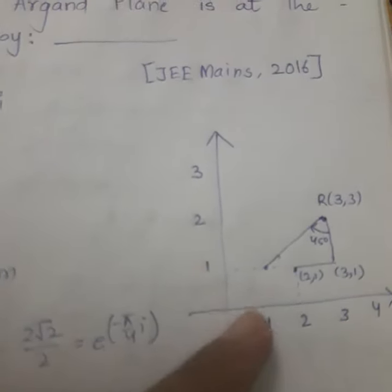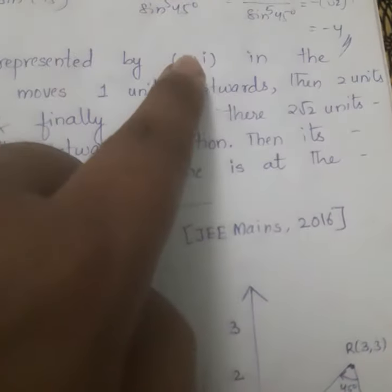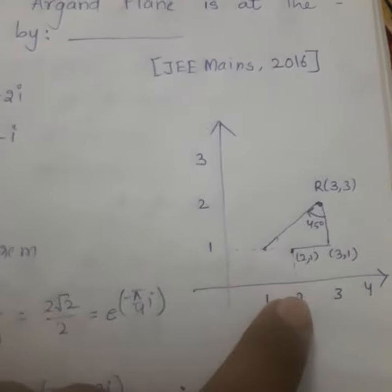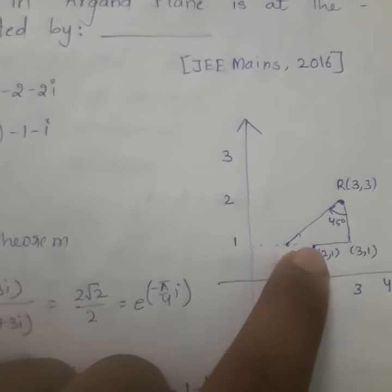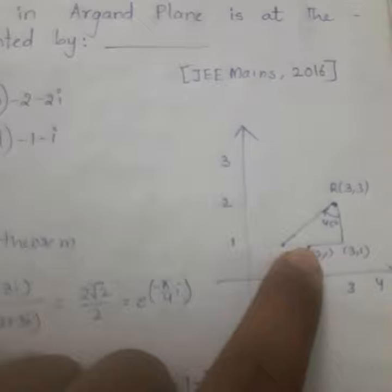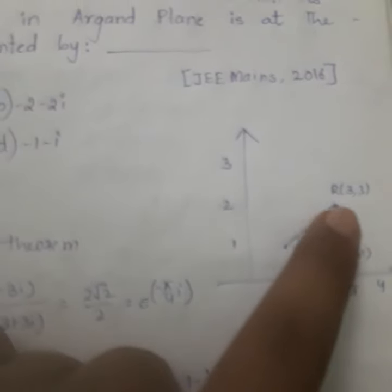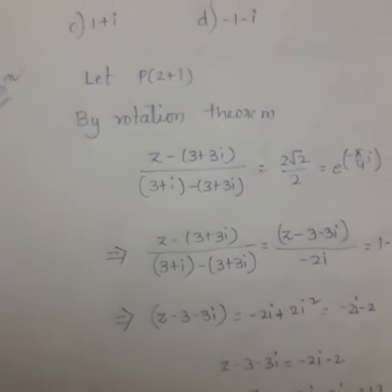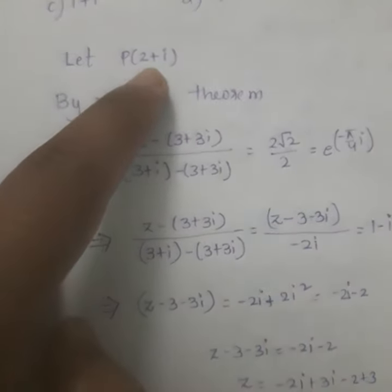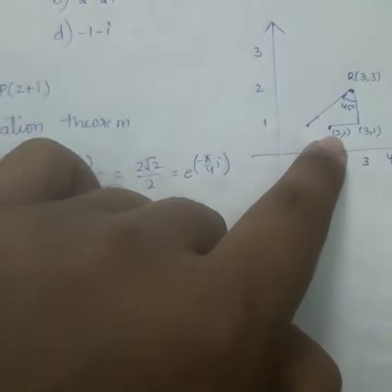He has given in the question 2 plus i. So this 2 plus i I am first drawing. It will be coming on x-axis 2 and y-axis, that is i will be coming on the imaginary part on y-axis. So 2 plus i. Now what I will have to do? I will have to apply rotation theorem. I will take point 2 plus i, that is this point.